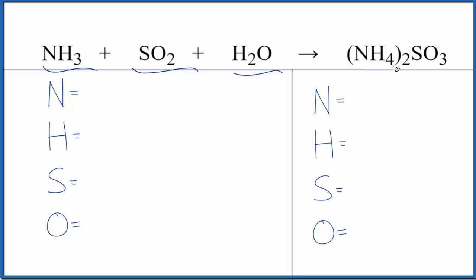So to balance the equation, the first thing we need to do, we need to count the atoms up. In the reactants, we have one nitrogen, and then we have hydrogens, three plus two. So we have five hydrogen atoms, one sulfur, and then two plus the one, three oxygen atoms.